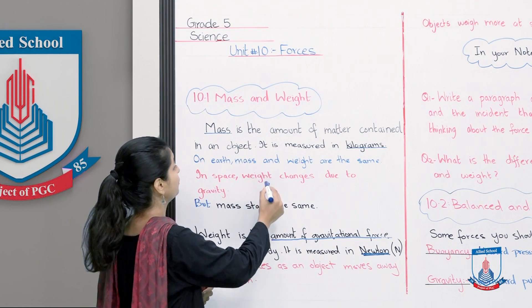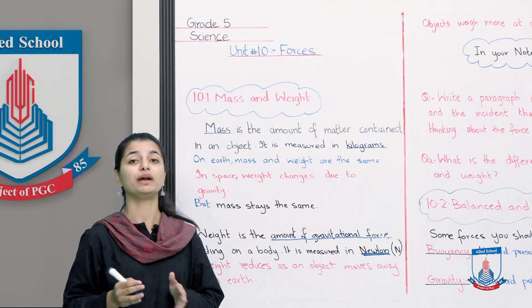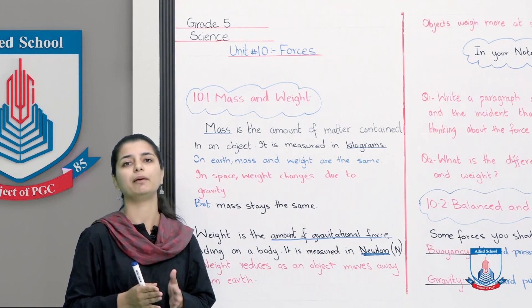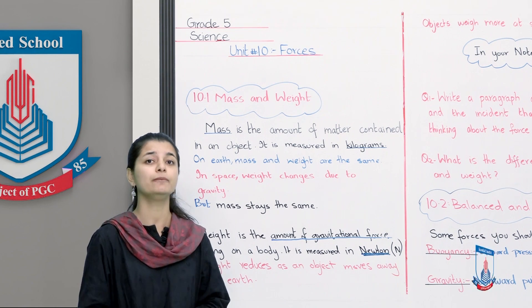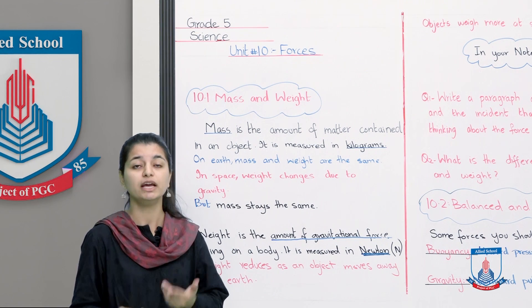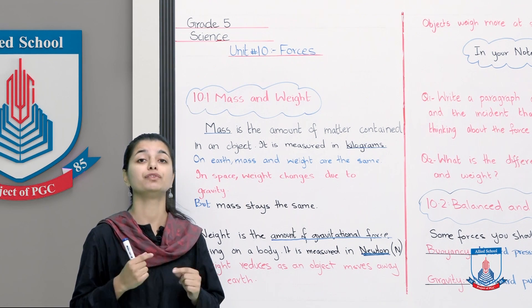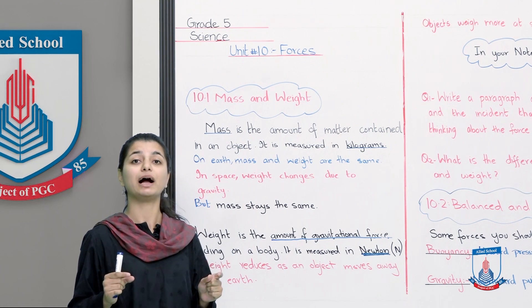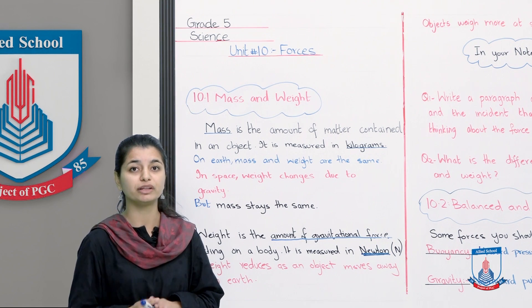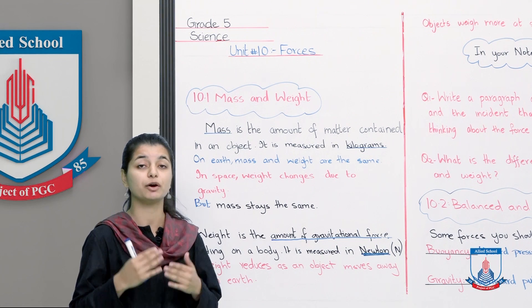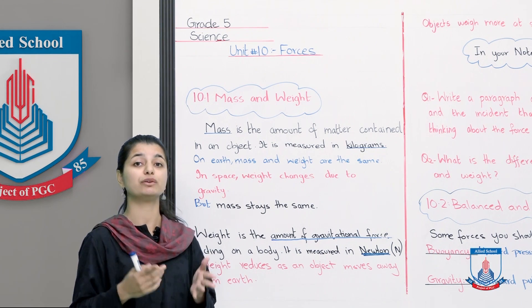On earth, mass and weight are the same. In space, weight changes due to gravity. Now what does that mean? Mass and weight are two different things. You also say that yes, my weight is so many kilograms, I weigh 45 kilograms or I weigh 60 kilograms, right? So you will think that mass and weight are the same thing. Because if my mass is 45 kilograms, then my weight is also 45 kilograms. But this is only on earth.